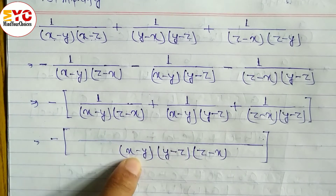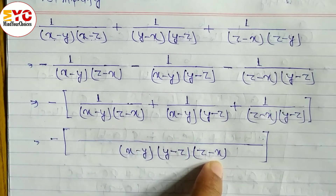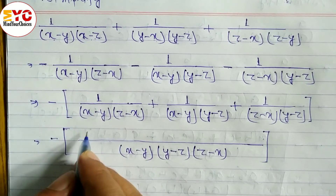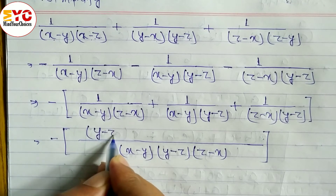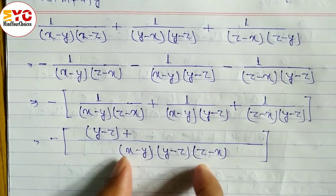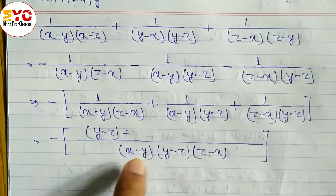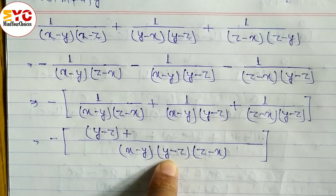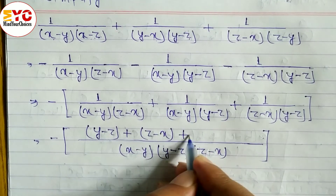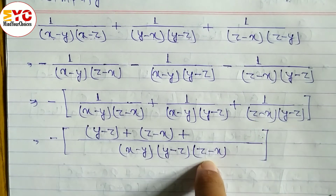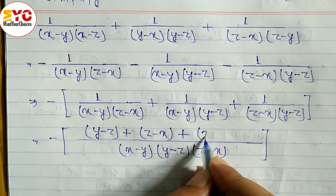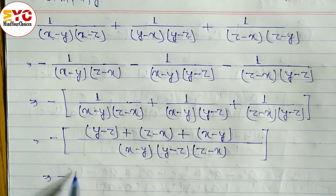Dividing the denominator for each term: For the first term, x minus y and z minus x cancel — remaining is y minus z, multiply by 1, giving y minus z. For the second term, z minus x and y minus z cancel — remaining is x minus y, multiply by 1, giving x minus y. For the third term, x minus y and z minus x cancel — remaining is y minus z, giving y minus z... wait — remaining is x minus y.